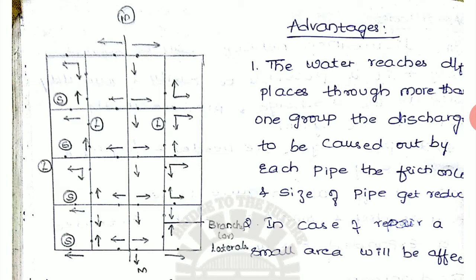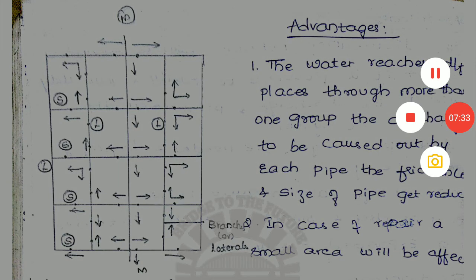To operate this valve, again, staff is required. Staff means waterman or valveman. Usually, we used to call it as valveman. This staff is required in more number, and these staffs are skilled ones. Skilled staff is required to supply the water systematically. So this is the grid iron system. Thank you guys.